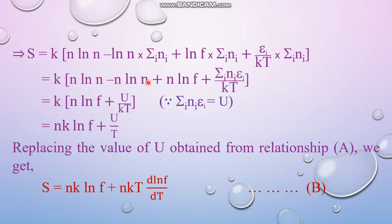What is left behind is N ln f plus the sum over i of N_i epsilon_i over kT. We know that the sum over i of N_i epsilon_i equals the internal energy U of the system, so we write U in its place. This gives k times the bracket N ln f plus U over kT. Expanding, this becomes Nk ln f plus U over T.